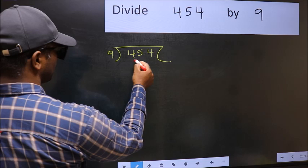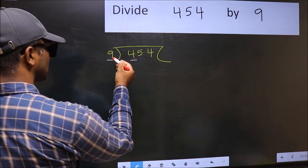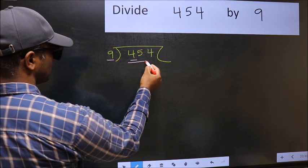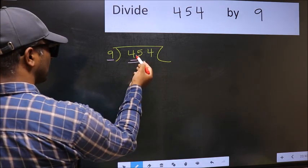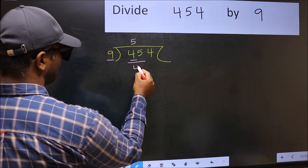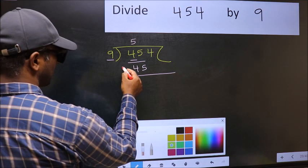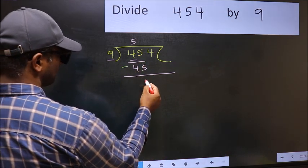Here we have 4 and here 9. 4 is smaller than 9, so we should take two numbers: 45. When do we get 45 in the 9 table? 9 fives 45. Now we should subtract. 45 minus 45 is 0.